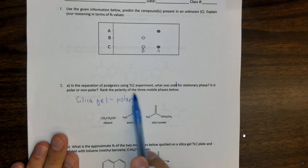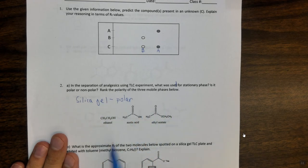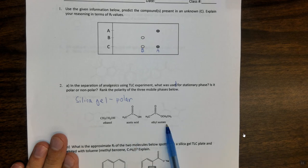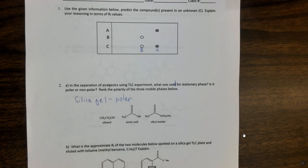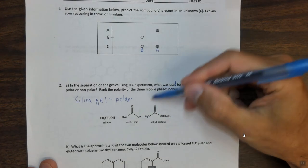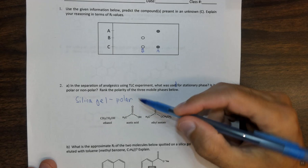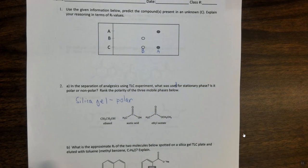It's very important that we remember that the stationary phase in TLC, silica gel TLC, is polar. Then it says rank the polarity of the three mobile phases below. So you used three different mobile phases: ethanol, acetic acid, and ethyl acetate, and we want to rank their relative polarities. If we look here, ethyl acetate is an ester, acetic acid is a carboxylic acid, and ethanol is an alcohol.